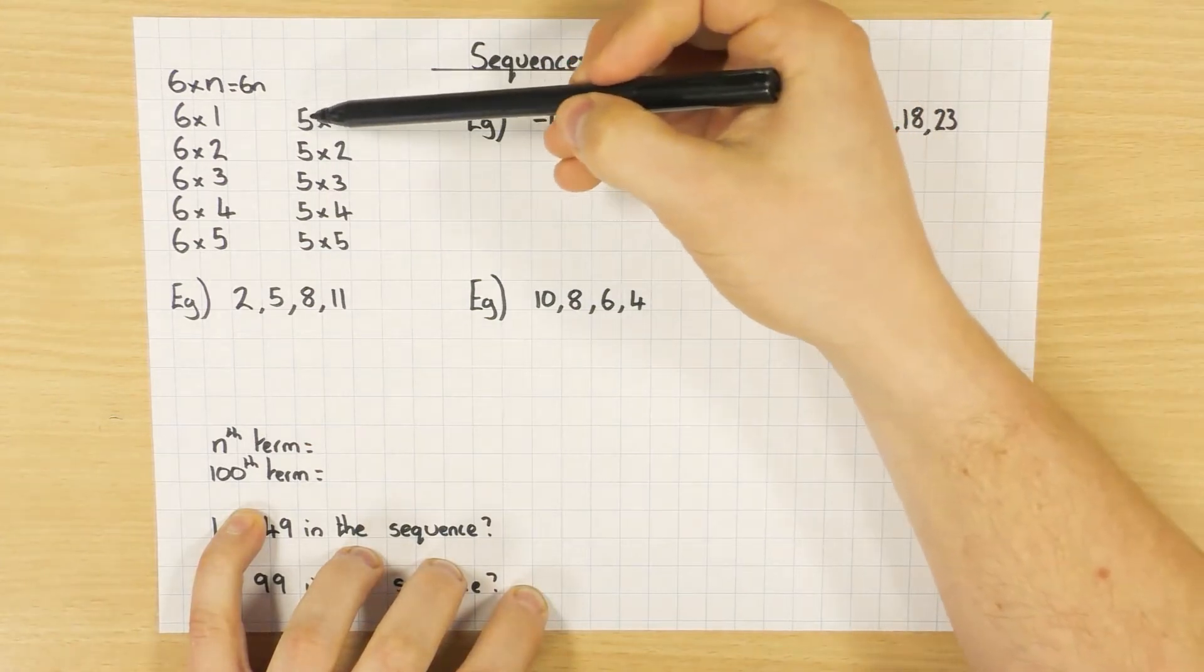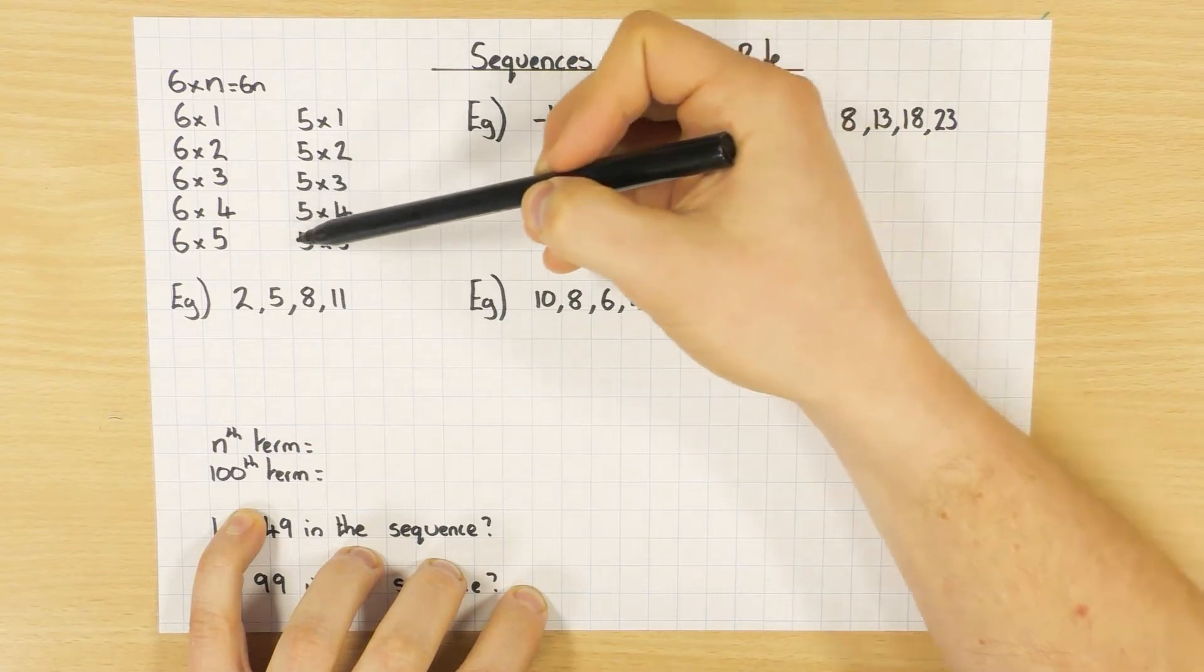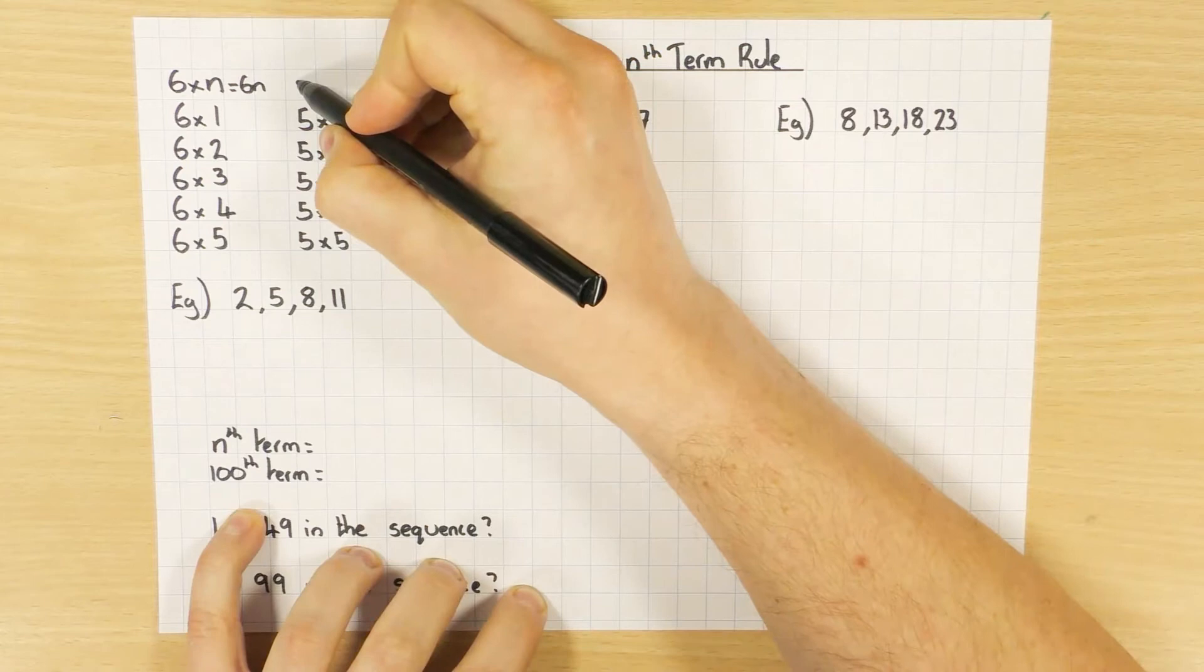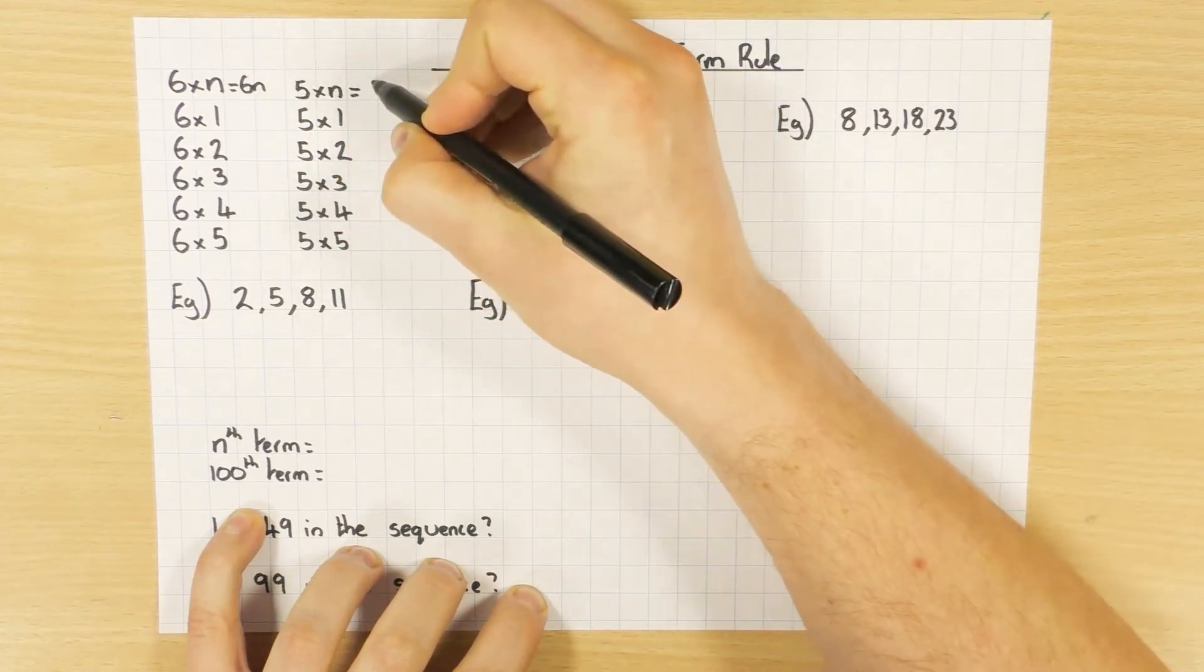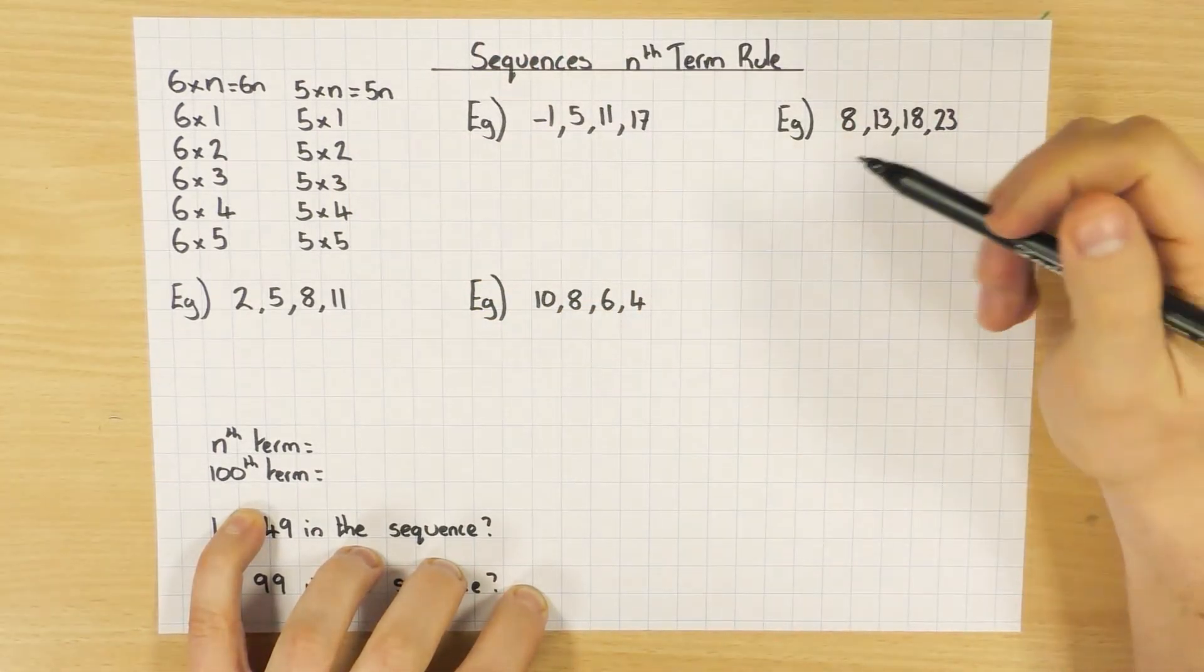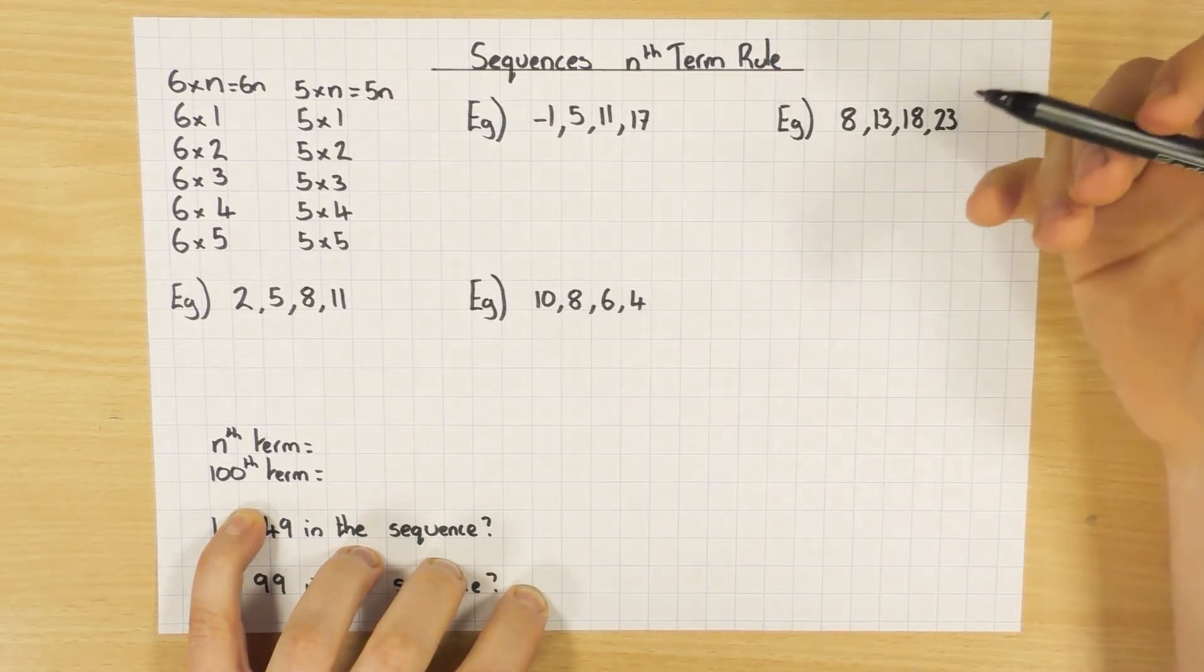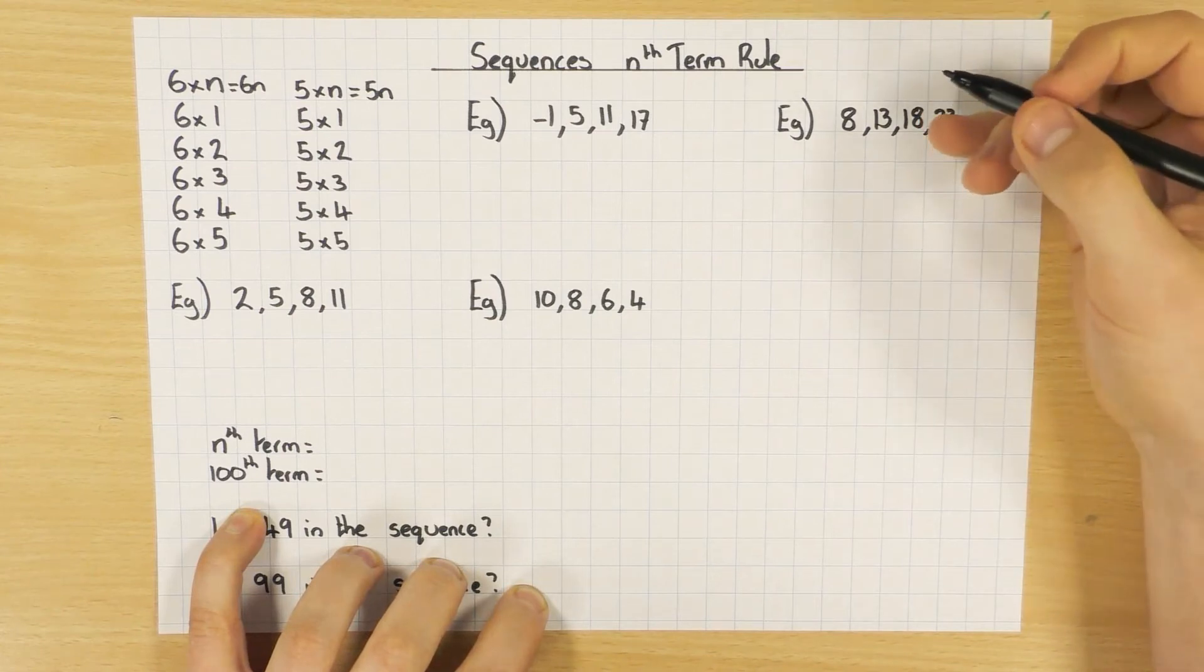Exactly the same thing here, if I want the 5 times table, 5 times 1, 5 times 2, 5 times 3, 5 times 4, 5 times 5, and so on and so forth, the general way, or the nth term rule, would just be 5 times n, which I can simplify to be 5n. So whatever the times table is, that's how you do it. If it's the 3 times table, it's 3n. If it's the 4 times table, it's 4n. If it's the minus 3 times table, it's minus 3n, and so on and so forth. That's going to be important for when we do this next bit here.